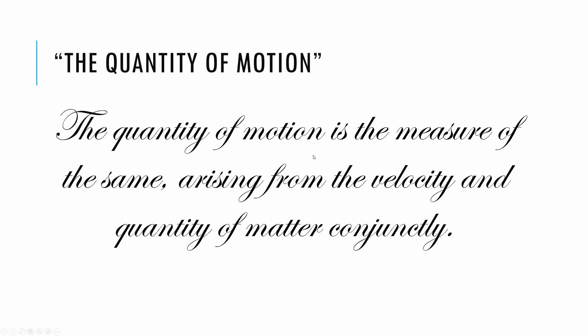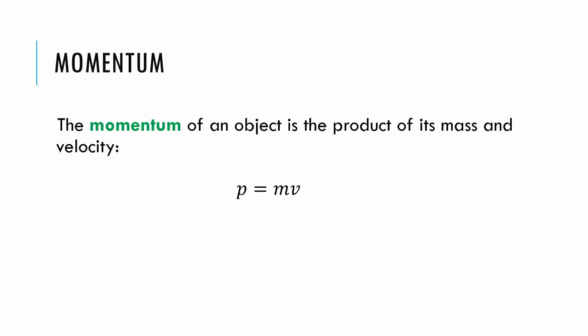So motion, the quantity of motion, which we now call momentum, is a product of velocity and mass. It's those two things combined together. And the definition of momentum is this mathematical definition: momentum of an object is the product of the object's mass and velocity.